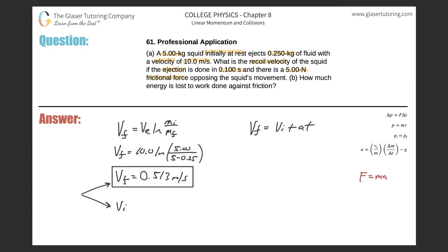What is the acceleration? Recall that force equals mass times acceleration, so acceleration equals force divided by mass. The key here is to use the correct mass — not the original 5 kilograms, but the mass after ejection. Since the squid ejected 0.25 kilograms of fluid, it now has a mass of 4.75 kilograms.